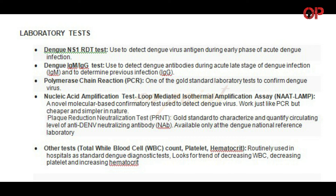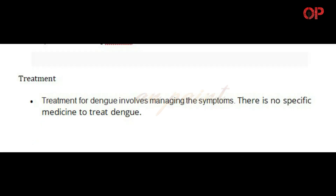Other tests include total white blood cell count, platelet, and hematocrit, which are routinely used in hospitals as standard dengue diagnostic tests. These look for a trend of decreasing WBC, decreasing platelet, and increasing hematocrit.